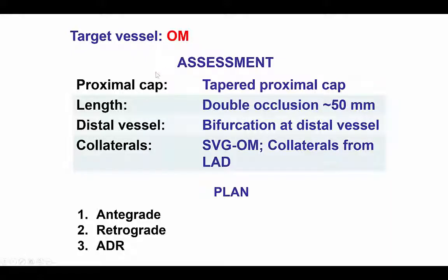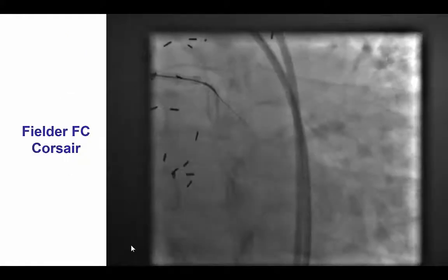Given those characteristics, we planned to cross antegrade and retrograde and avoid antegrade dissection re-entry, because of the presence of bifurcations in both distal caps.